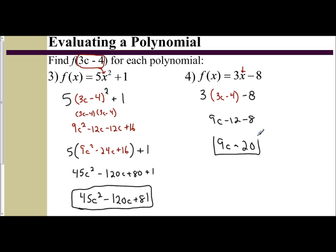And so you get 9c minus 20. So we have worked with function notation before in previous lessons. Now we're just applying it to polynomials. And we follow the same process: plug in, distribute, combine like terms, and simplify our answer. Thank you.